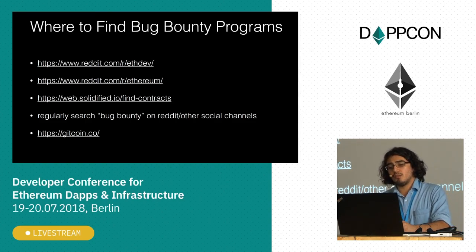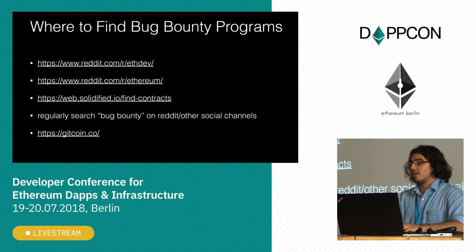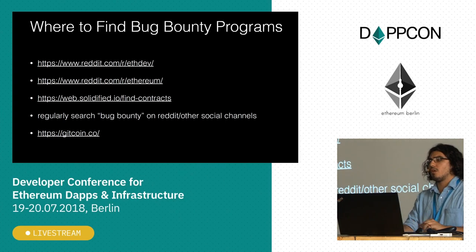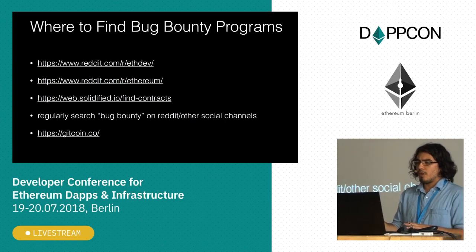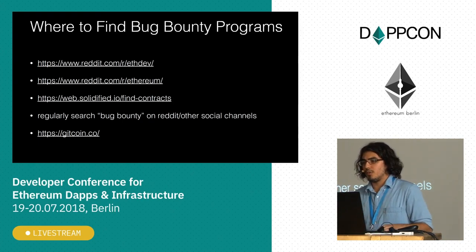So where do you find these? Reddit, number one — that's where I started getting into it, through r/ethdev, r/ethereum, or just searching bug bounty on these places. And then of course we have our own bug bounty platform on Solidified at web.solidified.io/find-contracts — there are active contracts there right now, including Melonport and Gnosis Safe. There's also Gitcoin, which does bounties for GitHub issues, and some people have used it for bug bounties, so definitely check it out.